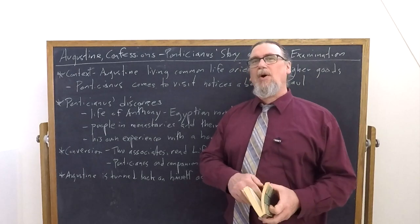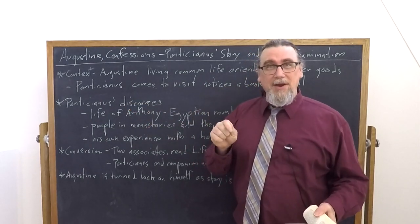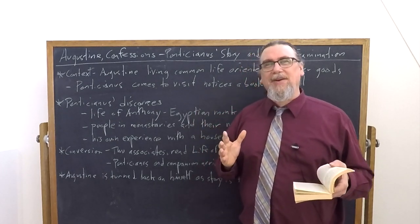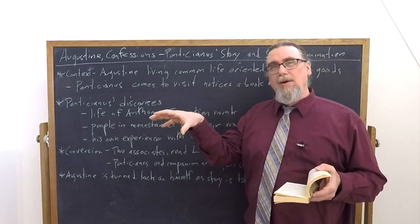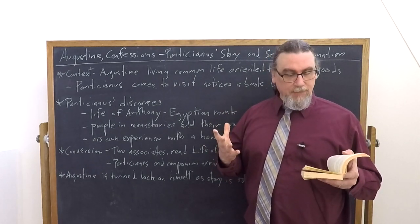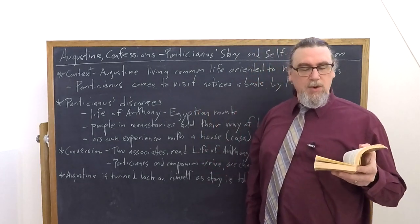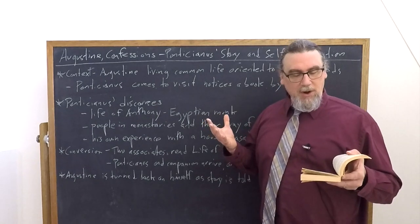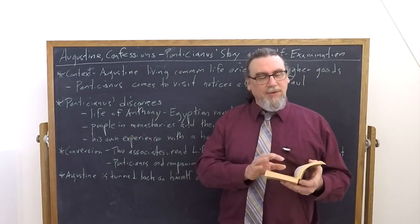Then Pontikianus brings it a little bit closer to home. So there's this cool guy out in the desert who we've got a life of. There's actually people right here in your own environment who are doing similar things. He says, from this subject, his discourse turned to the flocks within the monasteries. And Augustine is actually using that term, monasterium, right? And to their way of life. And it's not just the fact that people are going into monasteries. That's less interesting than where, how, in what way they're living. And Augustine has a great metaphor here, which is like a sweet smelling odor to you and to the fruitful deserts in the wilderness of all of which we knew nothing. There was a monastery at Milan, a city that Augustine knows, right? There was a monastery at Milan, filled with good brothers, situated outside the walls, under the fostering care of Ambrose, the bishop, but we had not known about it. He proceeded with his account and we kept silent and attentive.